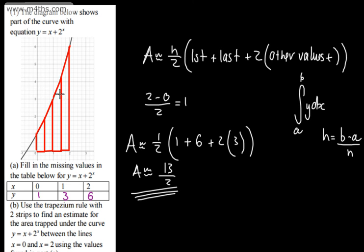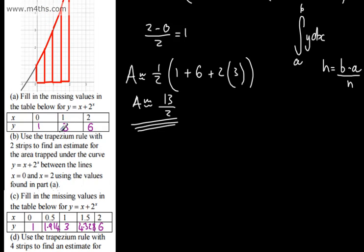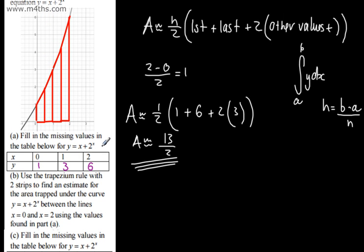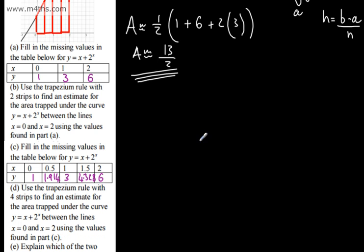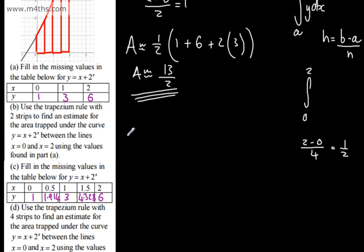There would still be some space between the top of each trapezium and the curve — that's why it's an estimate, indicated by the approximately equal sign. The value of h is now 1 half, since h equals 2 minus 0 over 4 strips, giving 0.5.